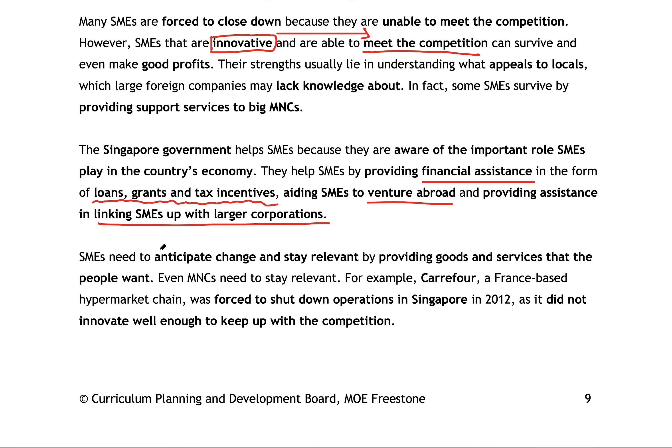The key idea for companies and individuals alike is anticipating change and staying relevant — the same concept from Principles of Governance back in Unit 2. We need to continuously anticipate changes in the economy and think of ideas to stay relevant. Only then can we stay afloat. Carrefour, a French hypermarket chain, shut down operations in Singapore because it had no innovation and could not keep up with so many hypermarkets and supermarkets competing here. They still exist in Malaysia and Indonesia, though.